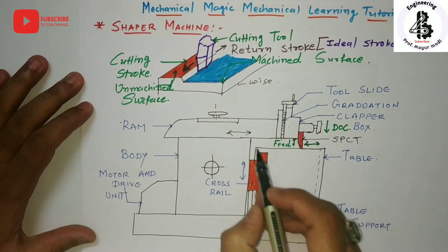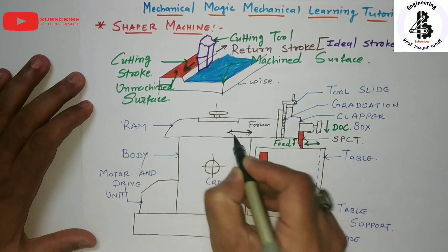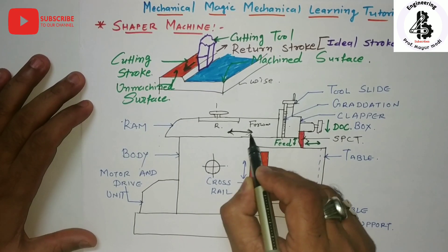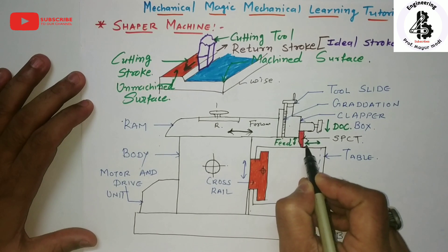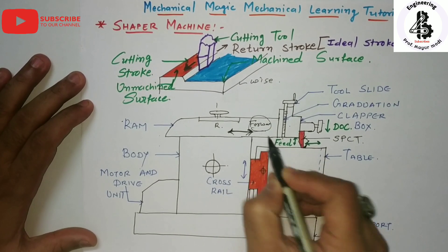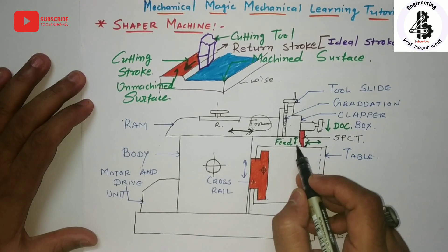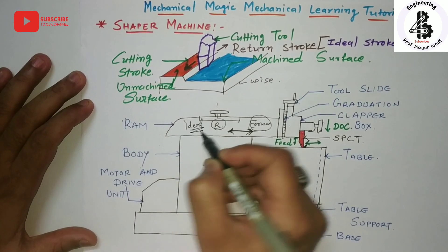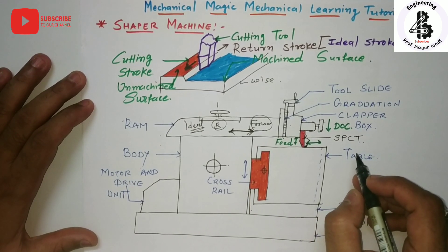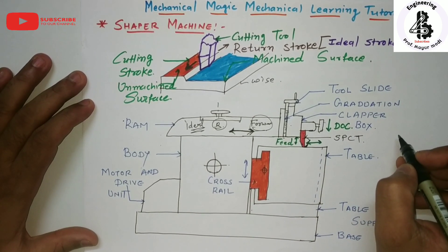The ram moves in the forward stroke — in this direction — and if the ram moves in the reverse direction, that is called the return stroke. When the ram moves in the forward stroke, cutting of the material takes place — 100% material removal occurs only during the forward stroke. During the return stroke, no material is cut; that is called the idle stroke. The cutting time during the return stroke is less compared to the forward stroke, making it a quick return mechanism for reducing manufacturing time.